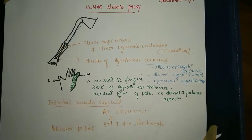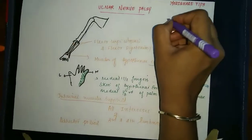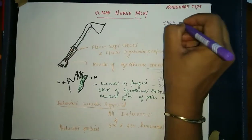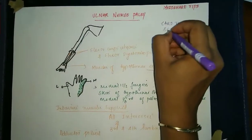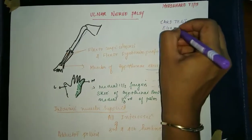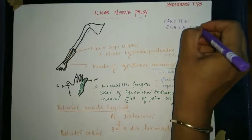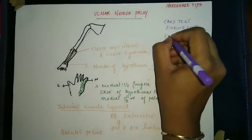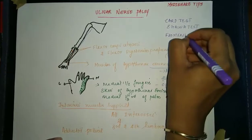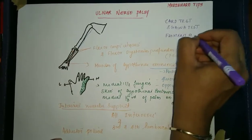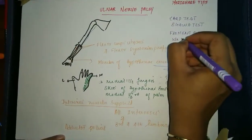We test the ulnar nerve through tests like Froment's sign, Egawa test, and Wartenberg sign.